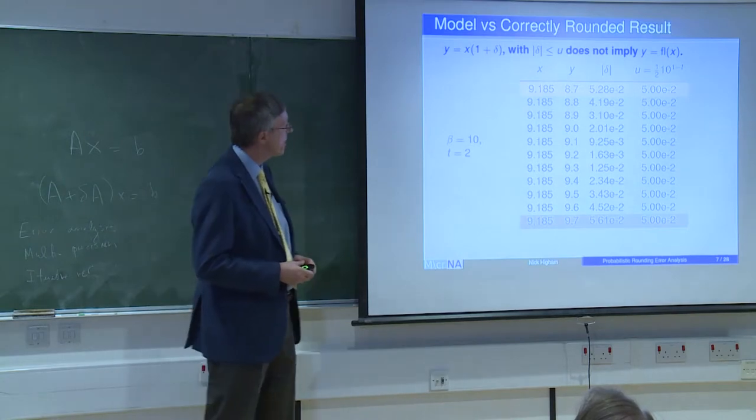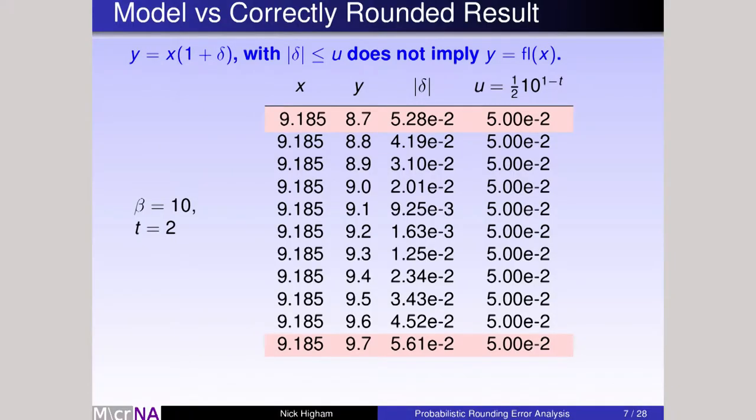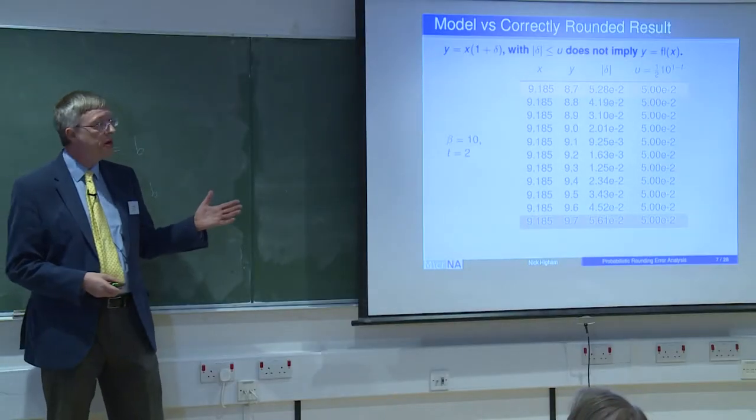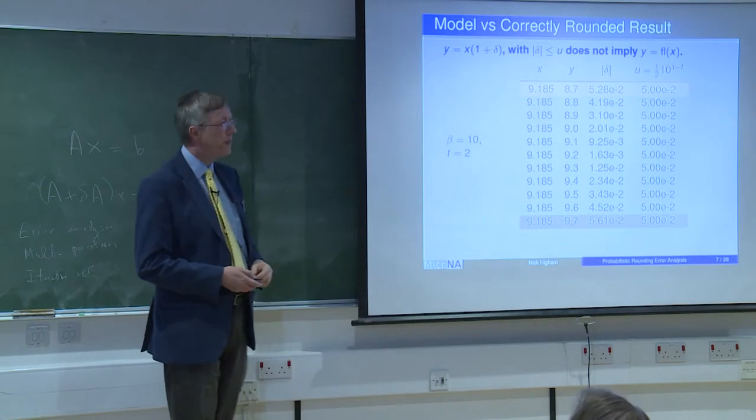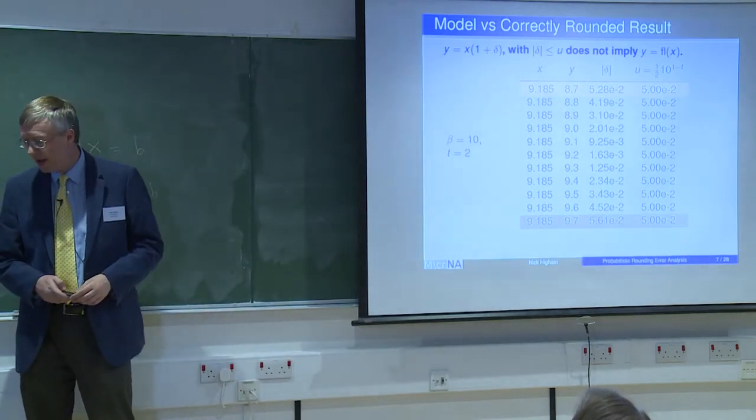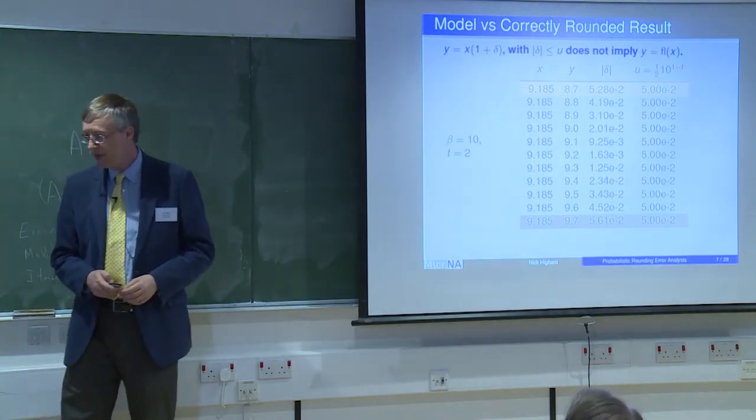Let me take a very simple example. X is 9.185. I'm going to work in base 10 to two digits. When I round to nearest, I get 9.2, and the delta is shown in the third column. That is less than little u, which is 5 times 10 to the minus 2. This line is telling us what we know from the theorem. But if you look at y's 8.8 down to 9.6, for all those other y's that aren't highlighted, the delta also satisfies the bound. So it's not just the correctly rounded number that satisfies the rounding model, but a whole load of numbers. In that sense, the model is rather weak. My quick answer is not really. I don't think that is the key feature of the model that we need to worry about.